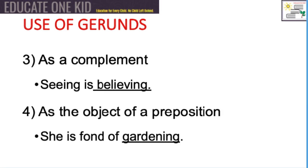A gerund is used as a complement — for example, 'Seeing is believing.' It is also used as the object of a preposition — for example, 'She is fond of gardening.' Believing and gardening are the gerunds in these sentences.